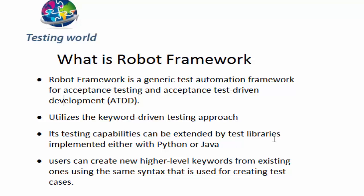For example, we can use a library called the Selenium 2 Library. This library provides many keywords we can use when working on web-based applications. For instance, if I want to click on any link, there is a specific keyword called 'Click Link'. This keyword is not provided by Robot Framework by default — it comes from the test library we install after Robot Framework.